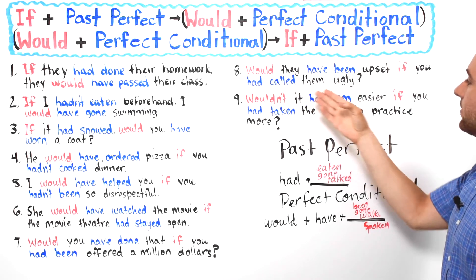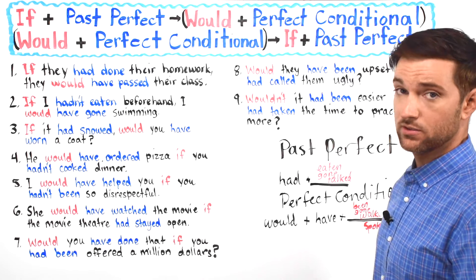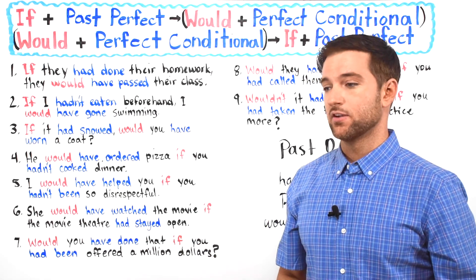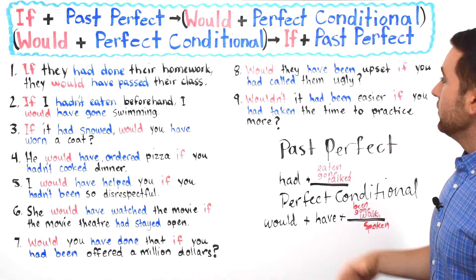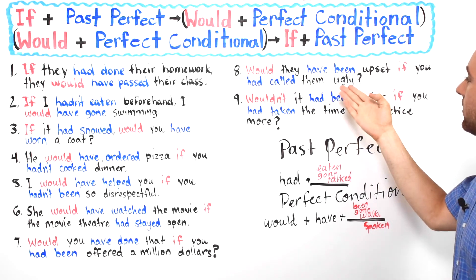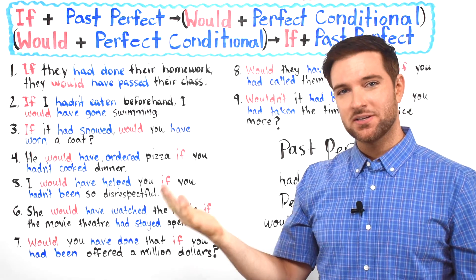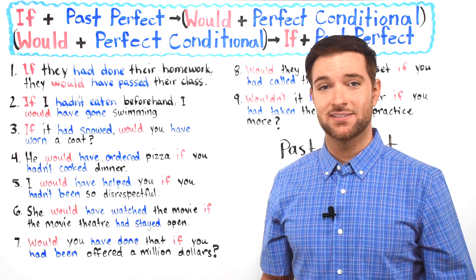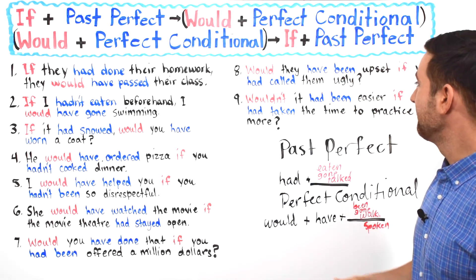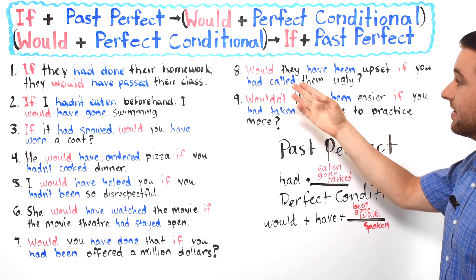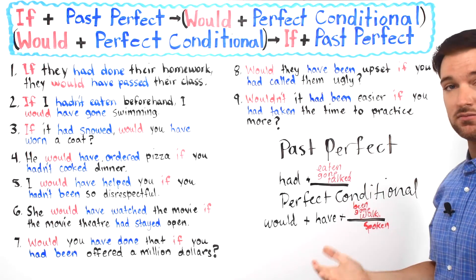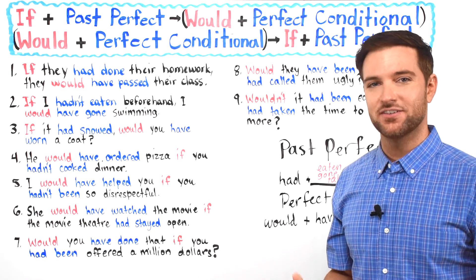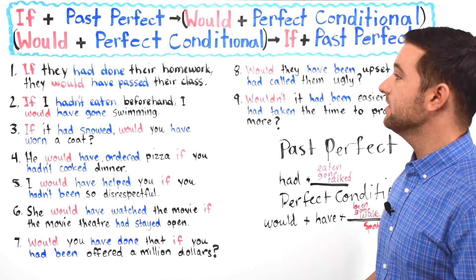Number eight: 'Would they have been upset if you had called them ugly?' Ugly is the opposite of beautiful — it's not a very nice word. You're asking a hypothetical question about something that could have happened in the past. Do you think calling somebody ugly would upset them? Probably. As a response: 'Yes, I think they would have been upset if I had called them ugly,' or 'No, they wouldn't have been upset — they would have laughed,' using the perfect conditional.